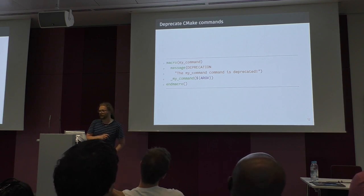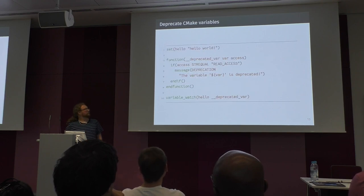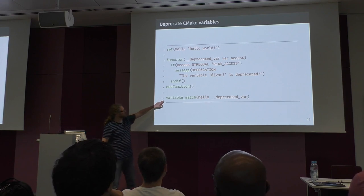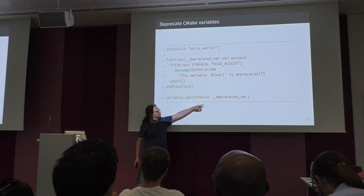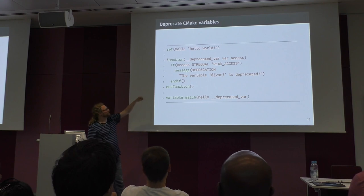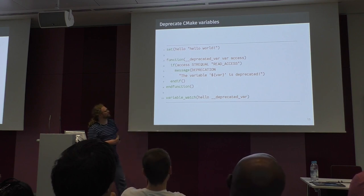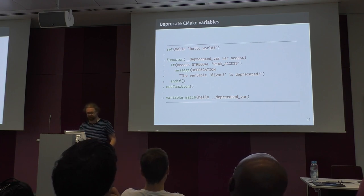What about variables? We added some variables and want to deprecate them. In CMake there's an interesting command called variable_watch. We can tell it which variable to watch and what callback to call. We create a function, call it deprecated_var, and inside check the access type — if it was read access, we issue a deprecation message. So every time someone references the variable, they get a warning.